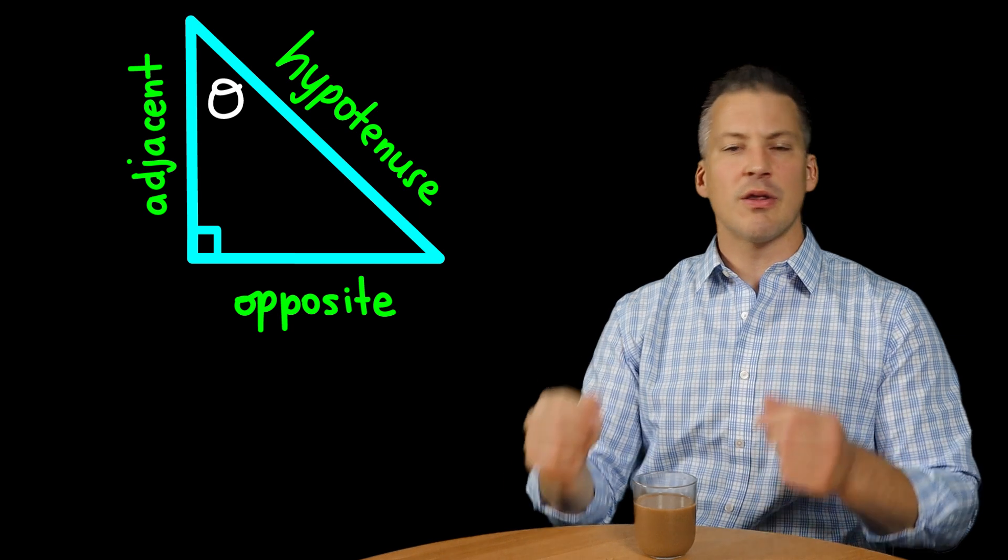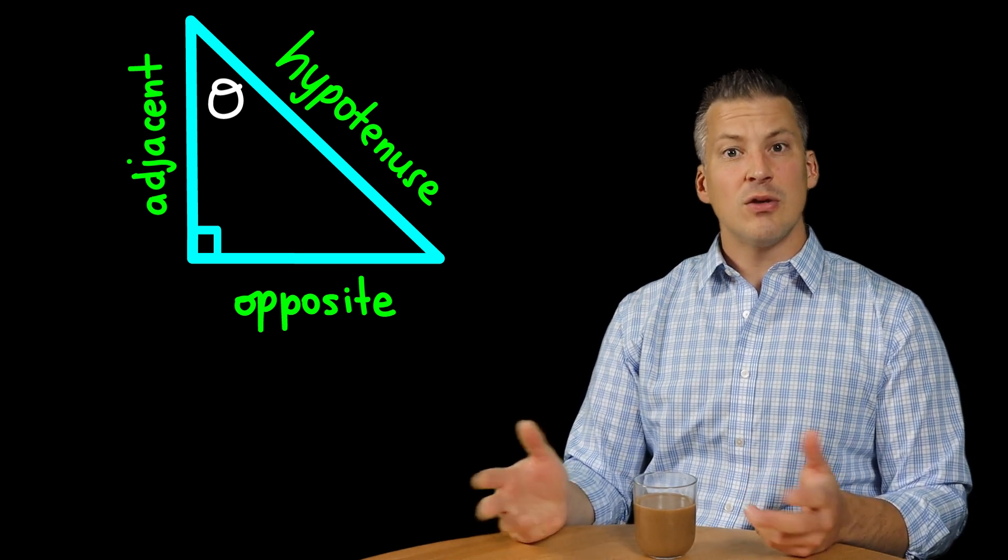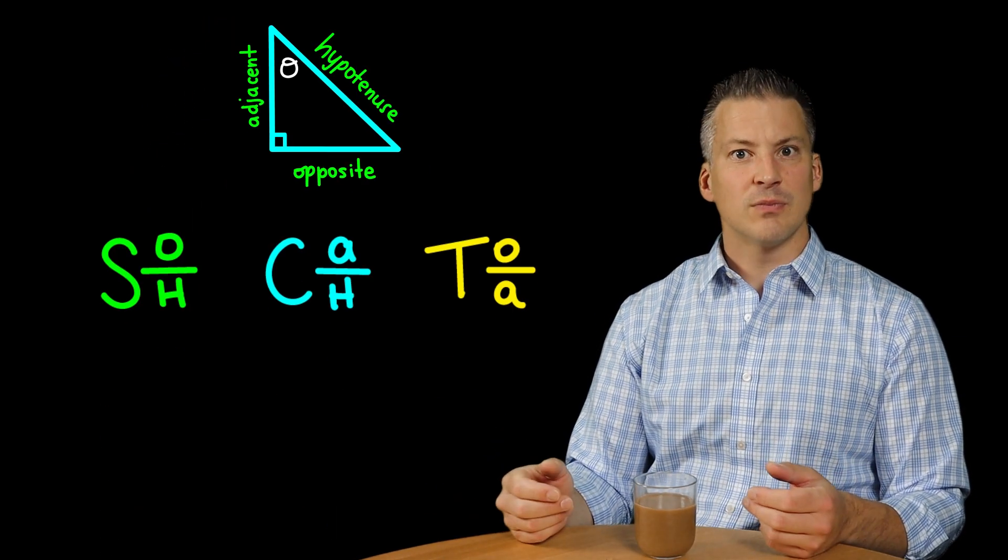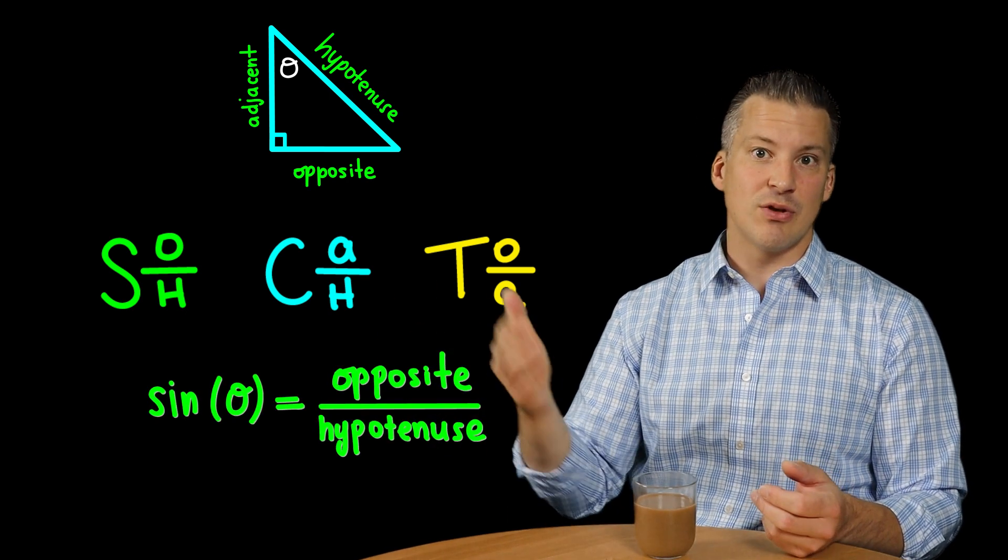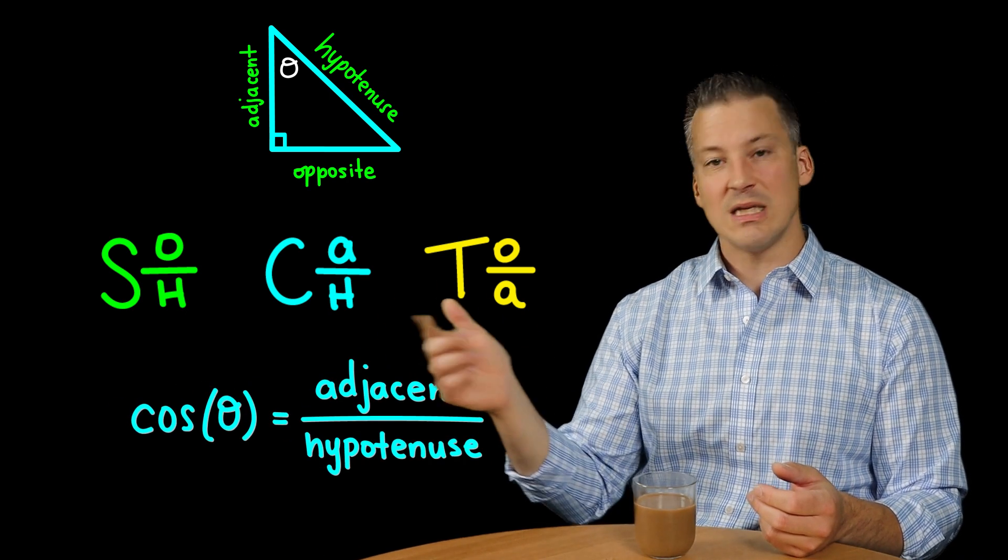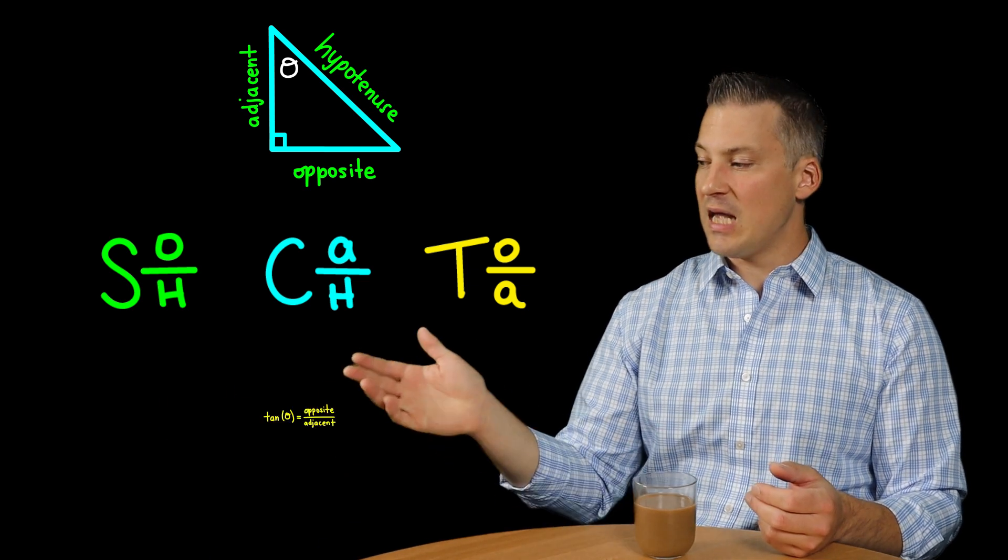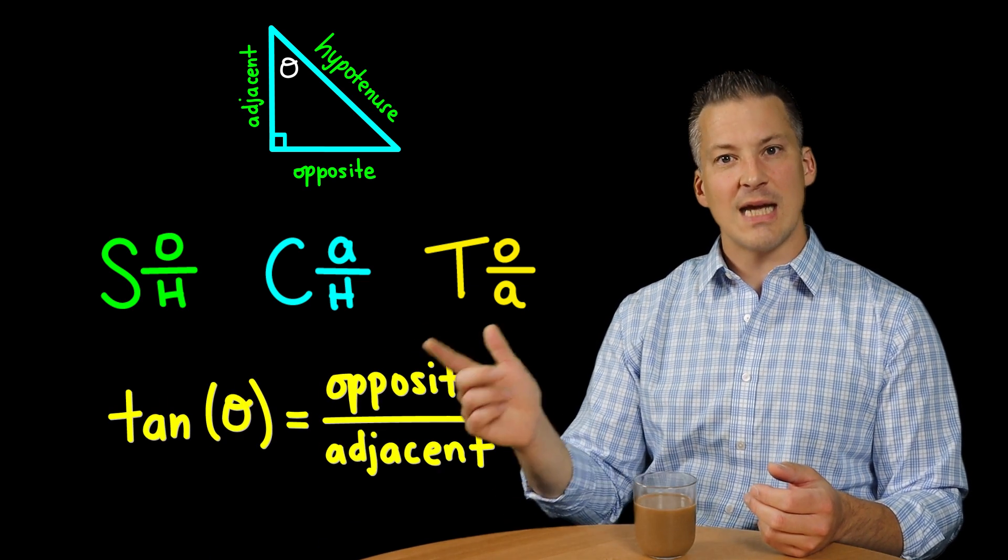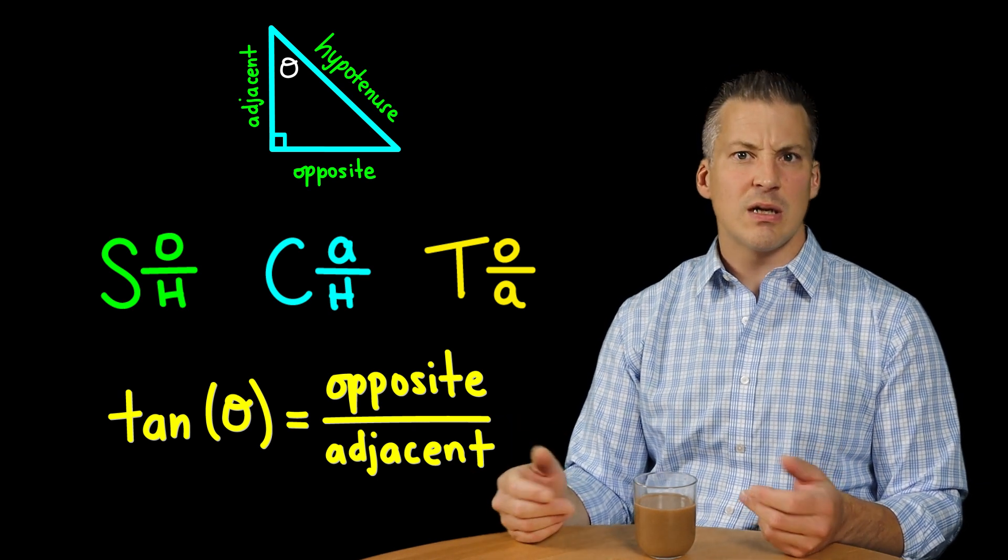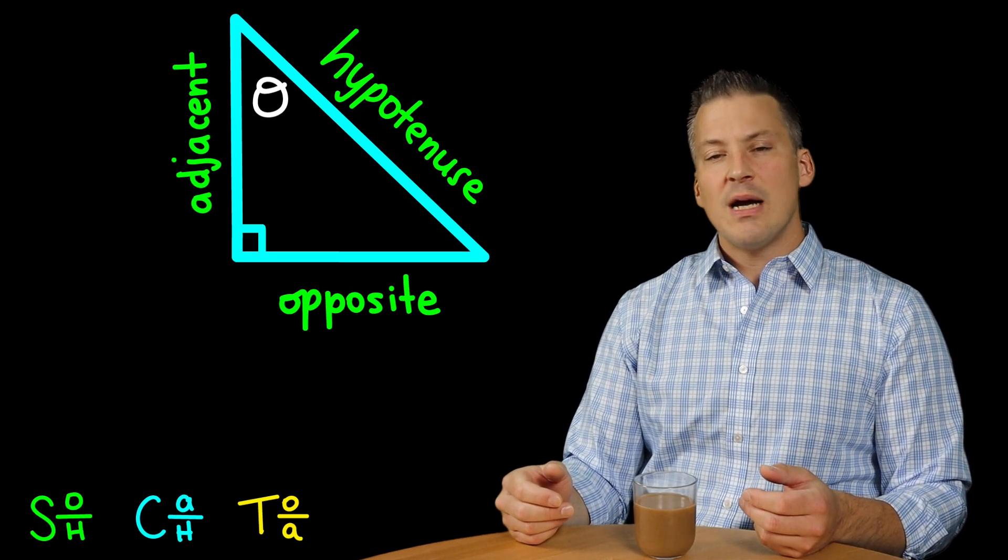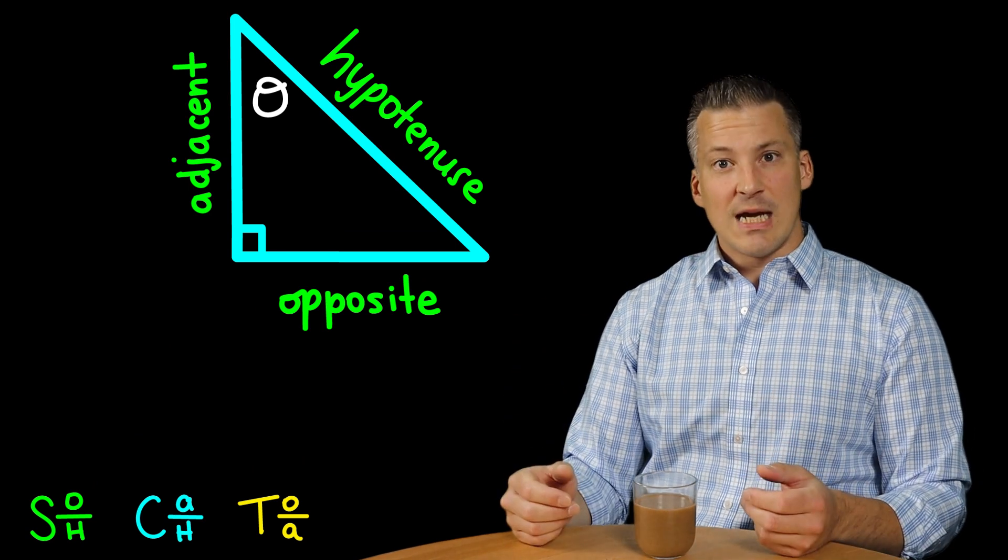Also, one other thing I want to mention is don't forget the mnemonic SOH-CAH-TOA. The tangent is equal to then the opposite over the adjacent side. That's an easy way to kind of remember that. So now, why don't we take a look at then an example.